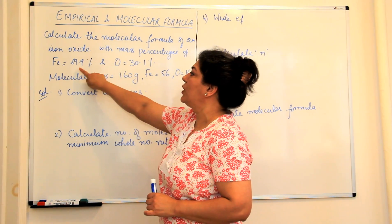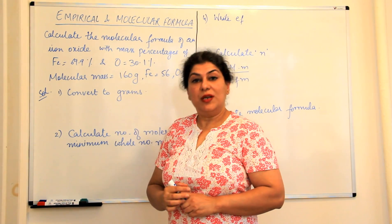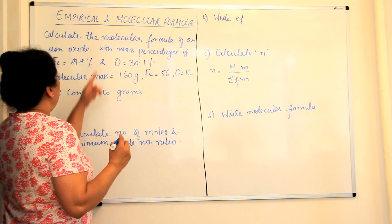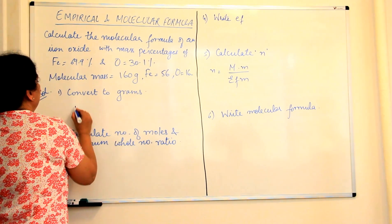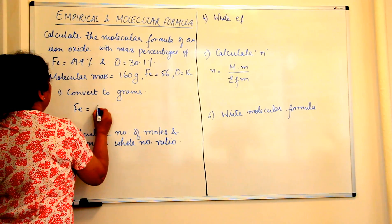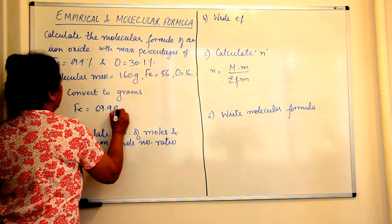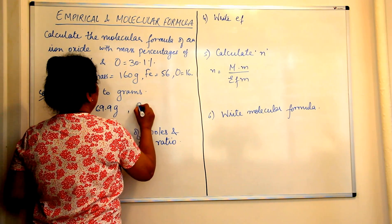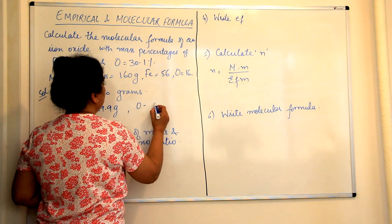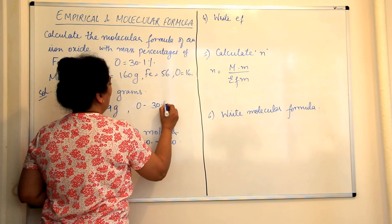The first step is to convert these percentages into grams. So iron is 69.9%, so iron would be written as 69.9 grams. Oxygen is 30.1%, so this would become 30.1 gram.